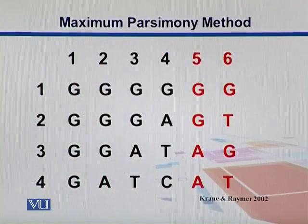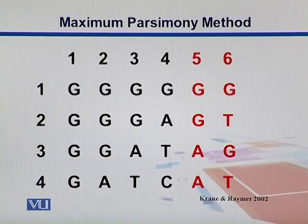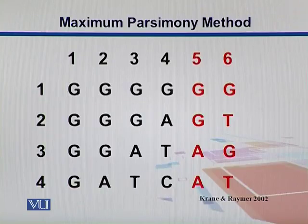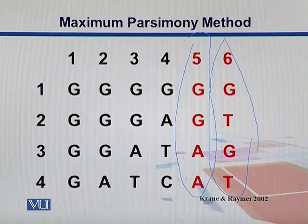For example, looking at this dataset with six columns: column one is non-informative since all nucleotides are the same. Column two has just one substitution, so it is also less informative. Column three is less informative because the nucleotides don't have twice representation, and same is the case with column four. Columns five and six are informative — column five has two G's and two A's, and column six has two G's and two T's. These are the informative sites used to make the tree.